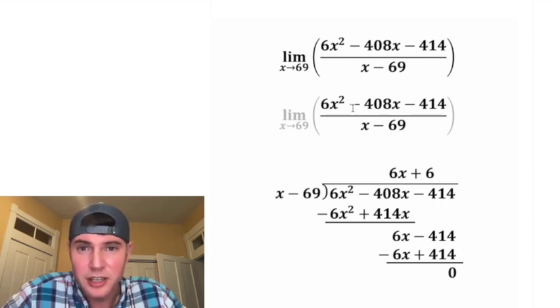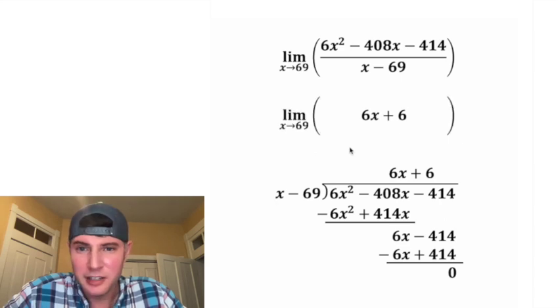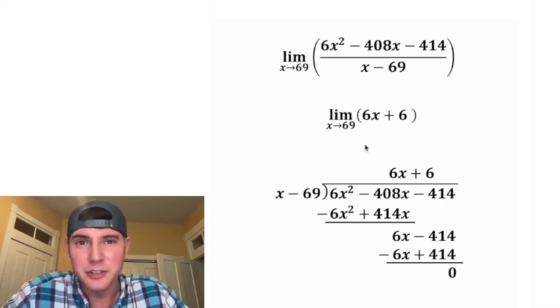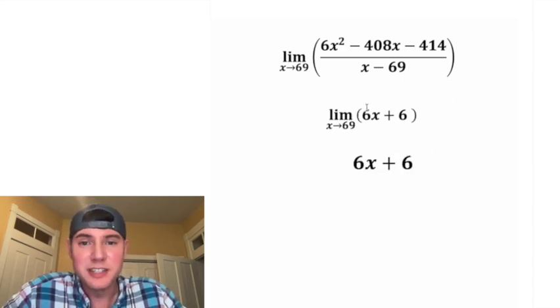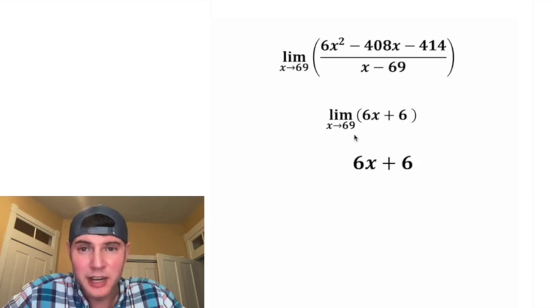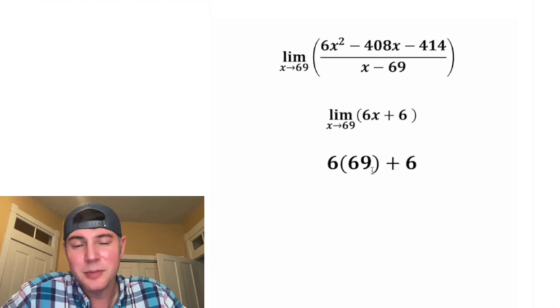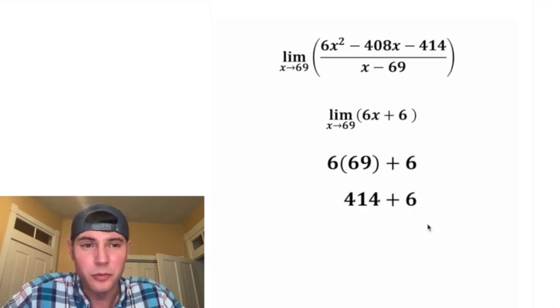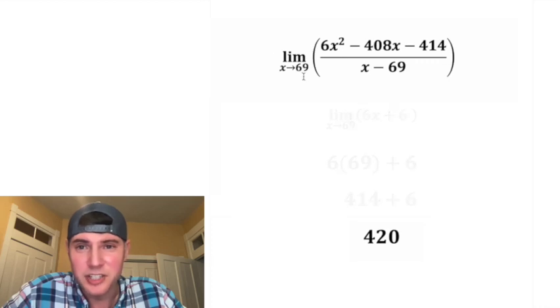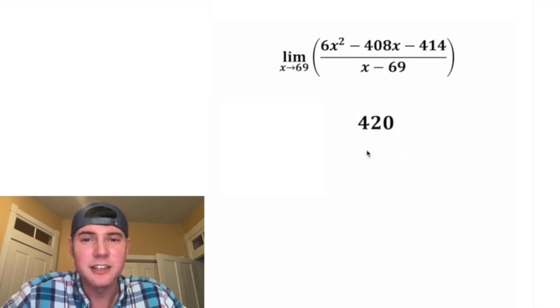So we can change this whole thing into 6x plus 6. Let's smush this all together and now we're ready to apply the limit. So we want to know what is this inside thing equal to when x approaches 69. Well, we can plug in 69 for the x. And 6 times 69 is 414, so we have 414 plus 6 and that's equal to 420. So the limit as x approaches 69 of this right here is equal to 420.